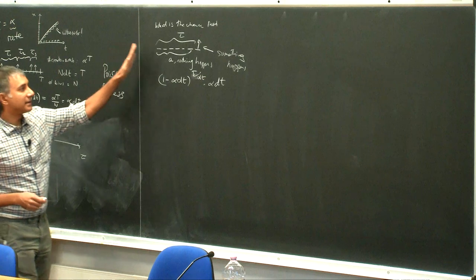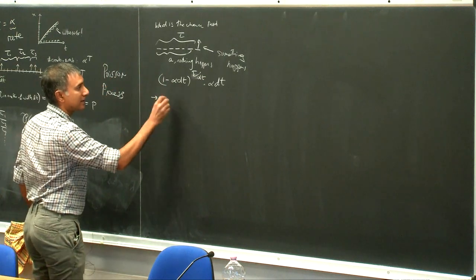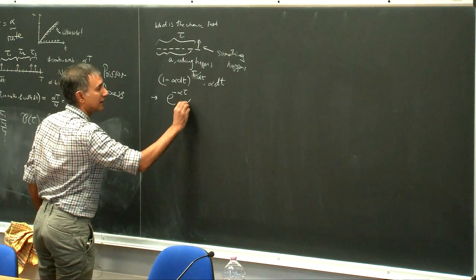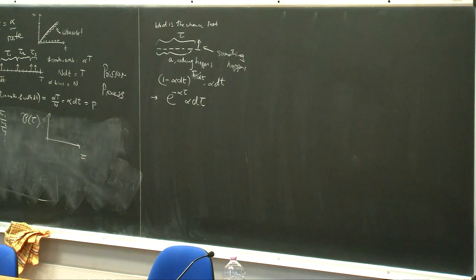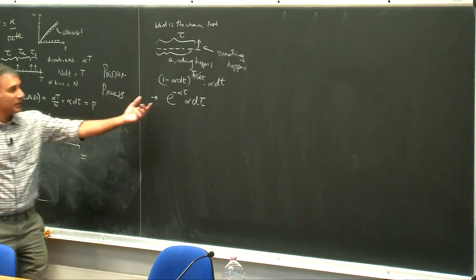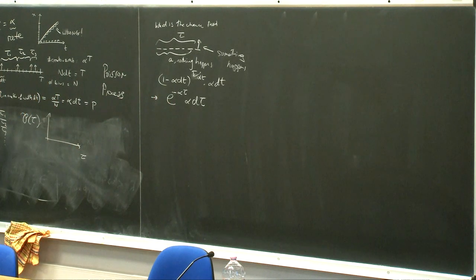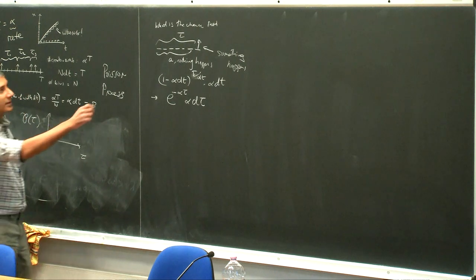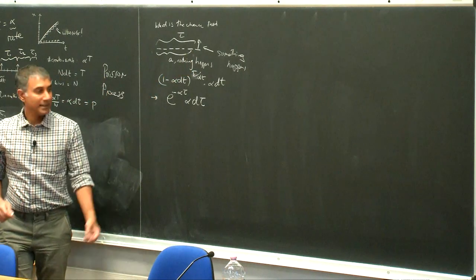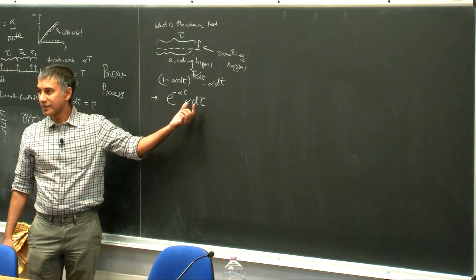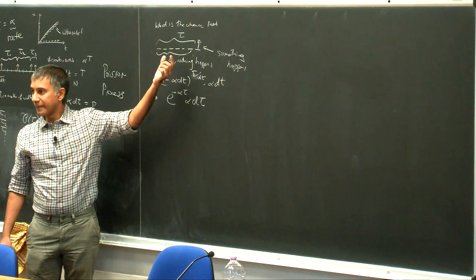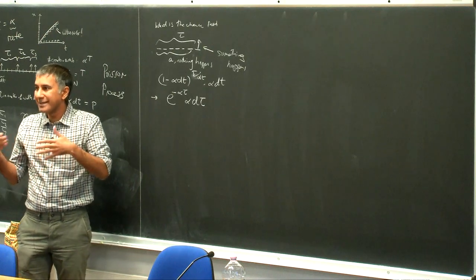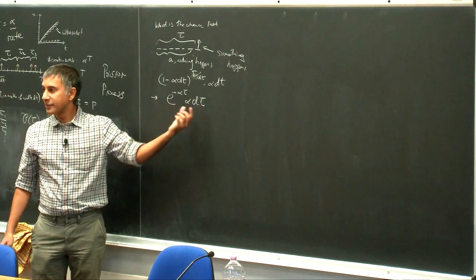This is literally the Bernoulli process — there's a very small chance of getting heads, most of the time you're getting tails. In the limit, this goes to e^(-ατ) × α×dτ. This expression is the answer to: what is the probability that starting now, nothing happens up to time τ, and then something happens in the very next interval of width dτ? There's a reason why this dτ is stuck in there — because the answer is actually a probability density.